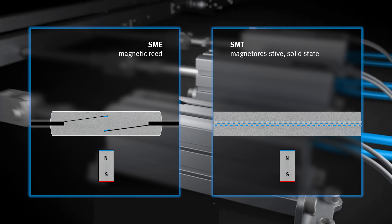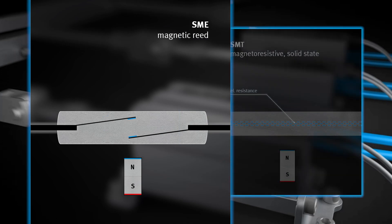The reed sensor consists of two ferromagnetic contact blades in a hermetically sealed glass tube. The two contacts are actuated by a magnetic field. A magnet sits on the piston for this purpose. When the magnetic field of the piston approaches, it pulls the contacts together until they touch. This closes the circuit that supplies the output with the signal. This can be further processed, for example by a PLC.